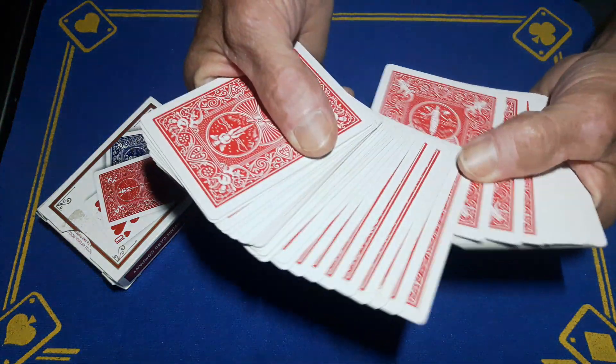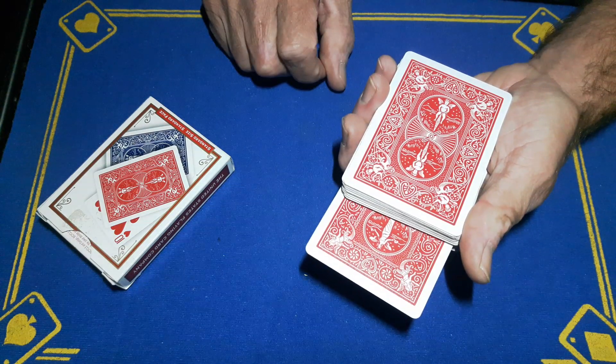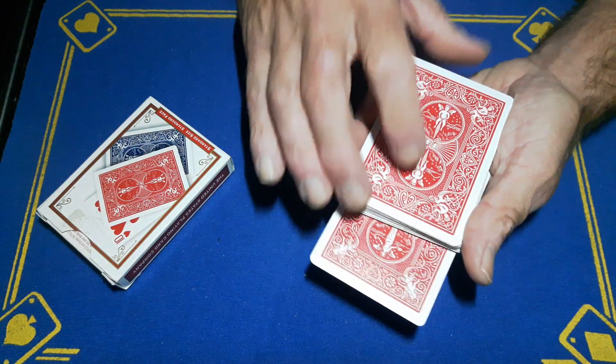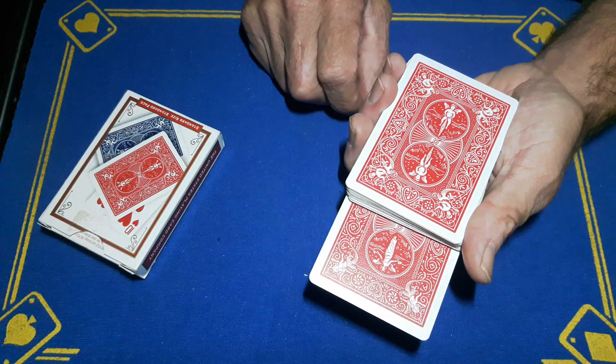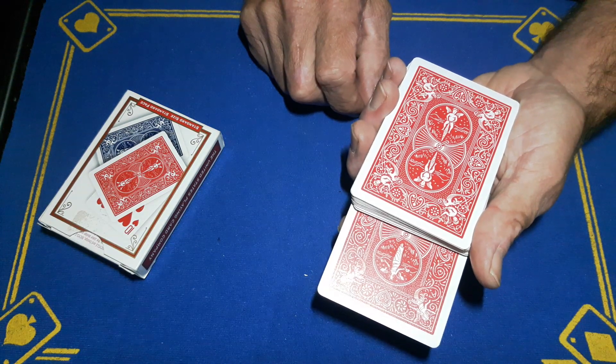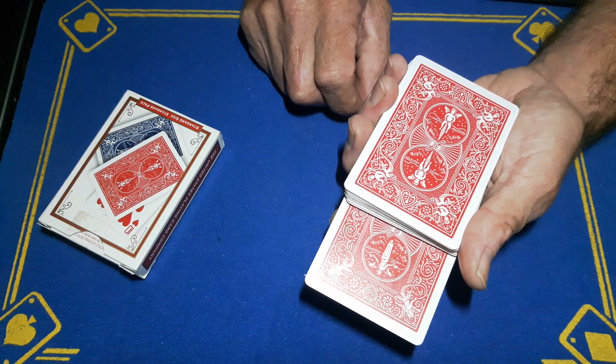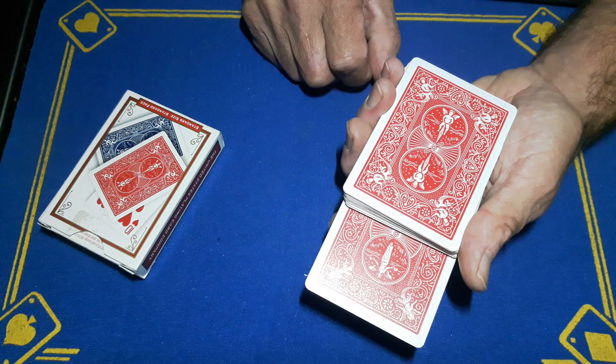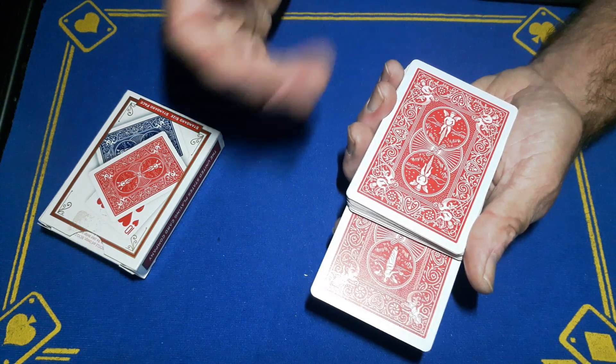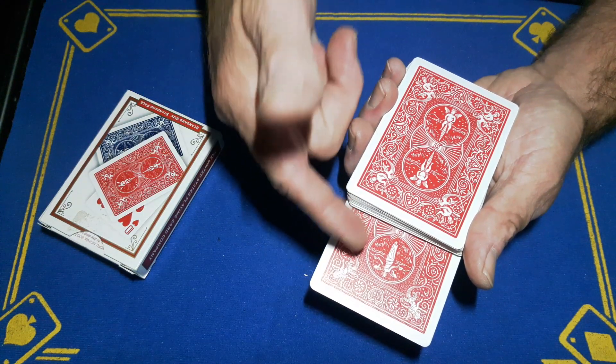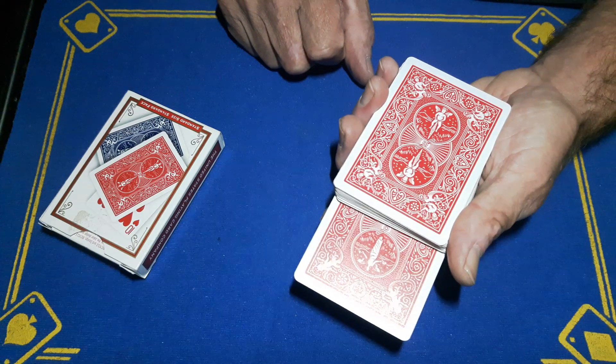But for now we're just going to get the spectator to choose any card. Now somebody noticed that this is a Bicycle card and this is a Maiden back card. That is purely because I was struggling to find a red deck of cards. Yes, I know it's hard to believe, but I know this is a proper deck because it is a special deck I don't want to destroy.